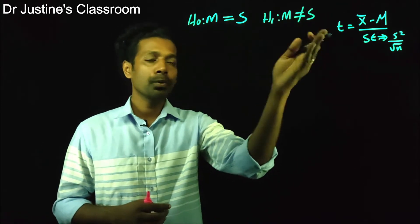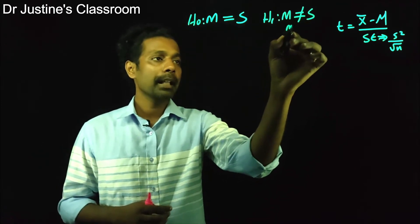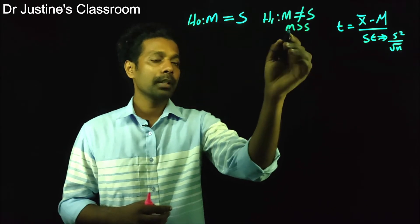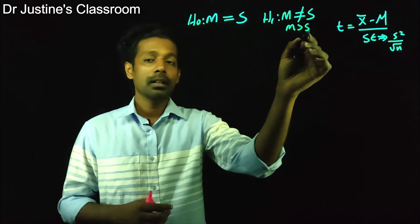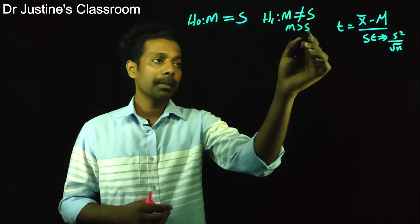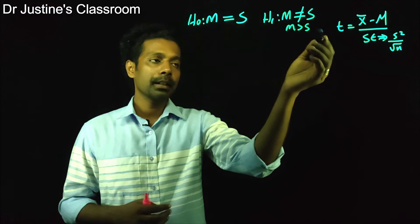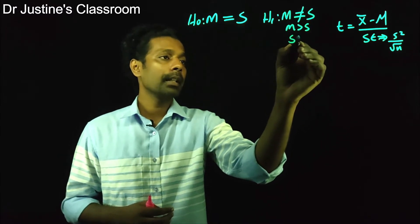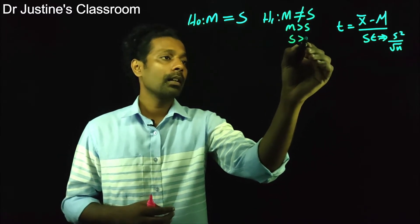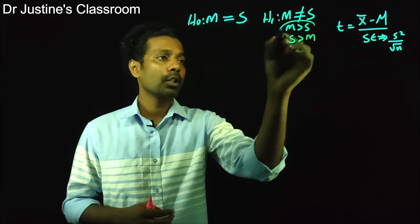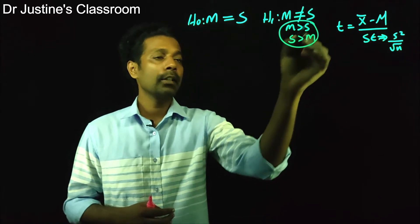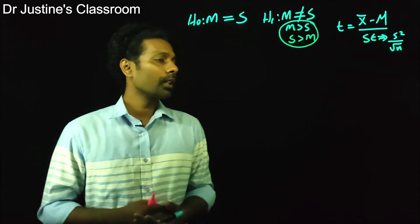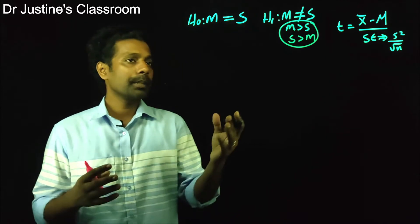This is a two-tail test because there are two possible outcomes: either married men score higher than single men in happiness, or single men score higher than married men. There are two tails, so this is a two-tail test.